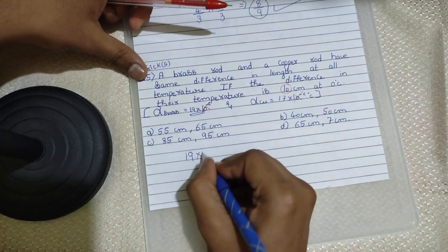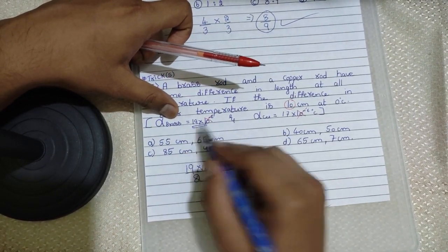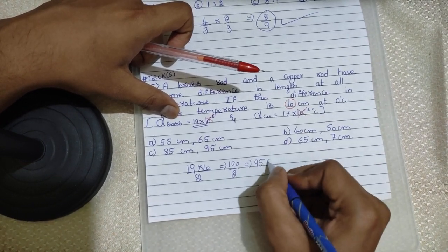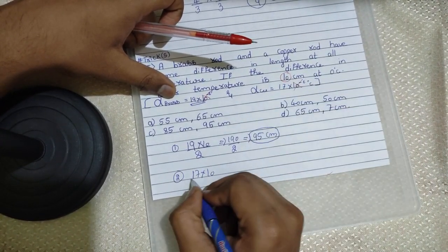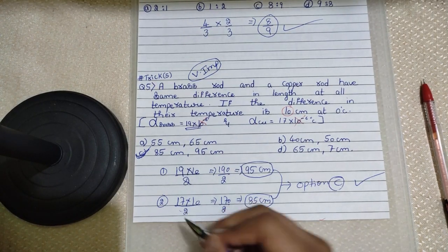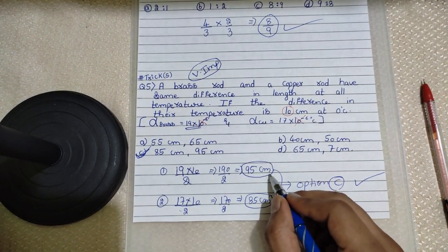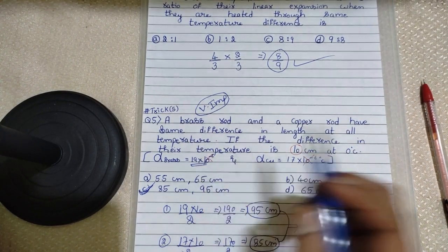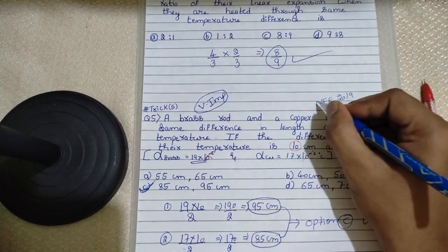After cancelling, we have 19 and another number. Multiply 10 centimeters by 10, then divide by 2 — because the difference between the two coefficients, 19 minus 17, is 2. That gives 100 divided by 2, which is 50. Then 17 multiplied by 10 is 170, divided by 2 gives 85 centimeters. Search these two values in your options — option C matches the final answer.